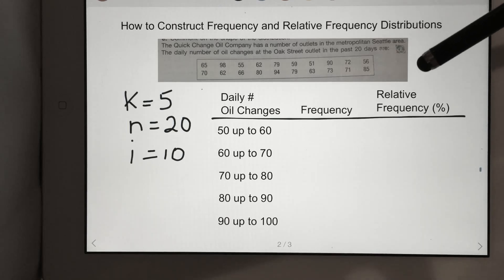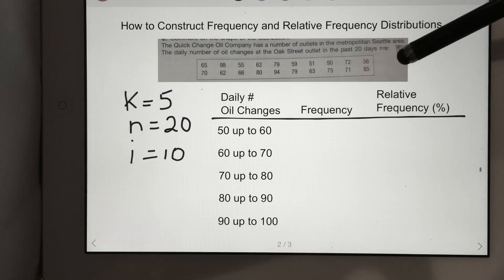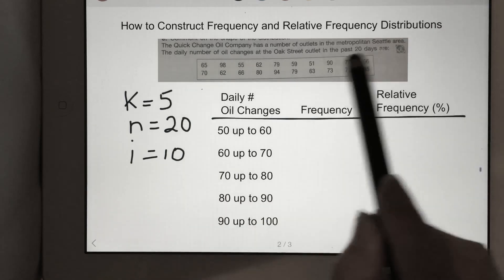We are using this example: the Quick Change Oil Company has a number of outlets in the metropolitan Seattle area. The daily number of oil changes at the Oak Street outlet in the past 20 days are listed down here.